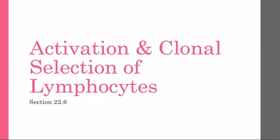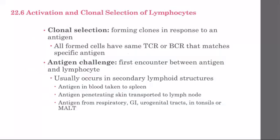Welcome to this video on section 22.6, where we are going to talk about activation and clonal selection of lymphocytes. First, let's define what clonal selection is: it's forming clones in response to an antigen. When we talk about proliferation and increasing the number of T cells or B cells, we are essentially talking about clonal selection, and all of the formed cells are going to have the same T cell receptor or B cell receptor that will match that specific antigen.